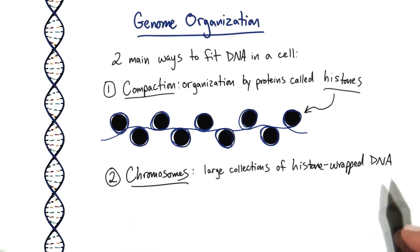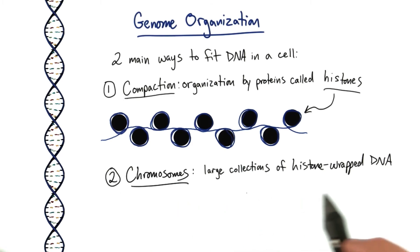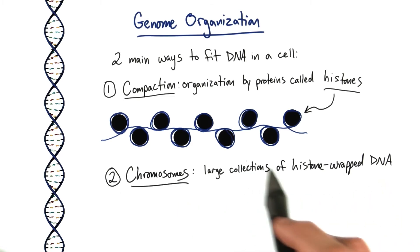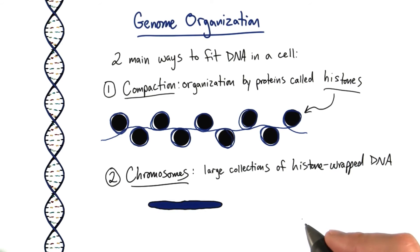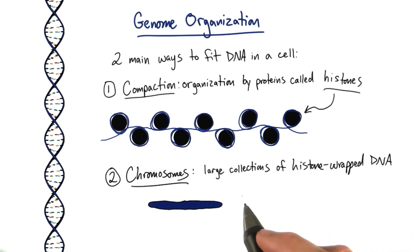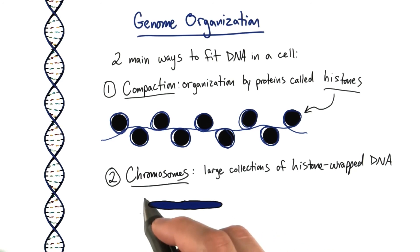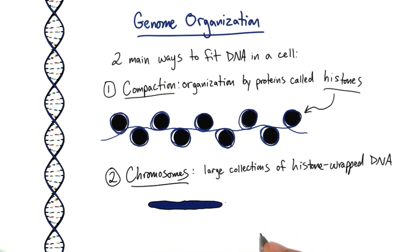The second way DNA is organized to fit inside a cell is that it's split into units called chromosomes, which are large collections of this histone-wrapped DNA. You've probably seen pictures of chromosomes before — they're usually these long, large linear pieces of DNA and histones called chromatin.